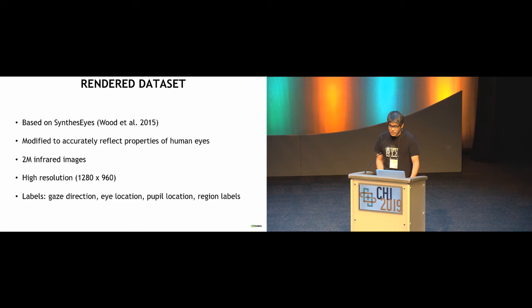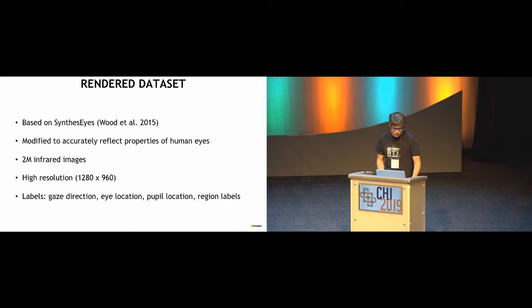Our synthetic dataset is based on one excellent prior work called Synthesize, created by Wood and colleagues. We modified the geometry and material properties of that model to more accurately reflect properties important for near-eye gaze estimation. We rendered two million images in total at high resolution. Each image comes with labels of gaze direction, eye location with respect to the camera, pupil location in the image, and pixel-accurate region labels.